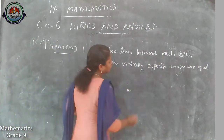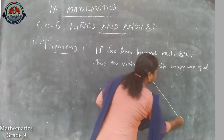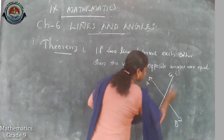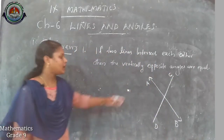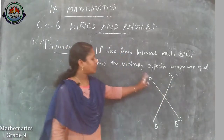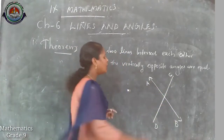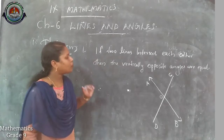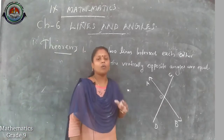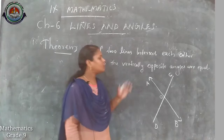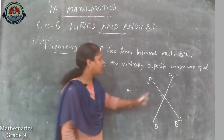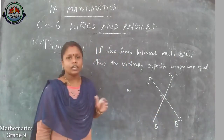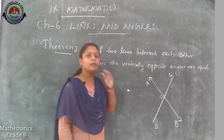We take two lines AB and CD. They are intersecting each other, and we take the intersecting point as O. We need to prove that the vertically opposite angles are equal. The vertically opposite angle pairs are angle AOC and angle DOB, and also angle AOD and angle COB.